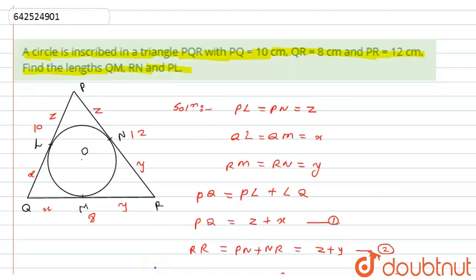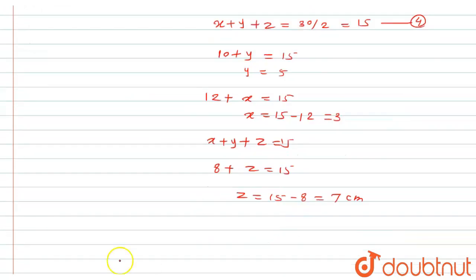So as I have done the consideration above, QM is equals to X equals 3 cm. Likewise, RN equals Y equals 5 cm. Then PL equals Z equals 7 cm. So here is the solution for this particular question. I hope you will like the solution. Thank you.